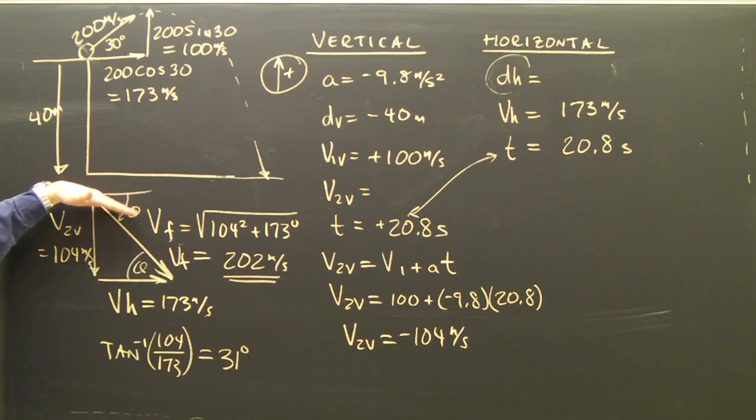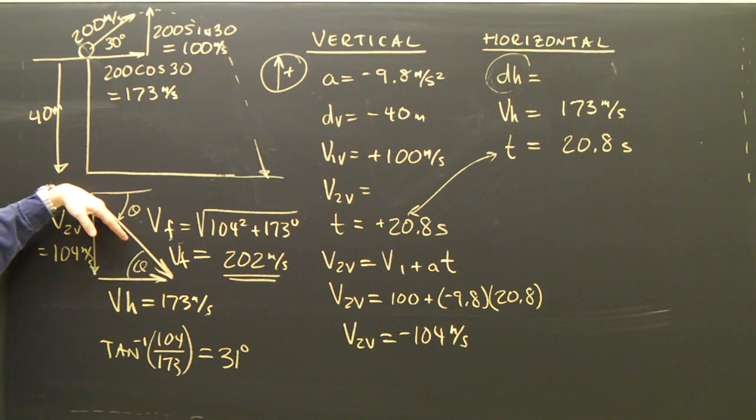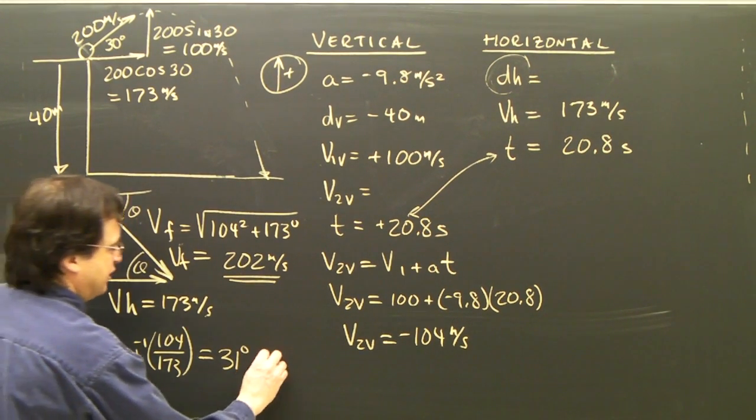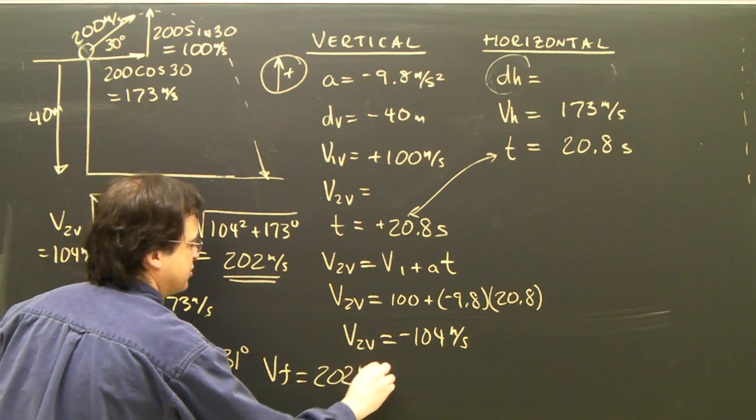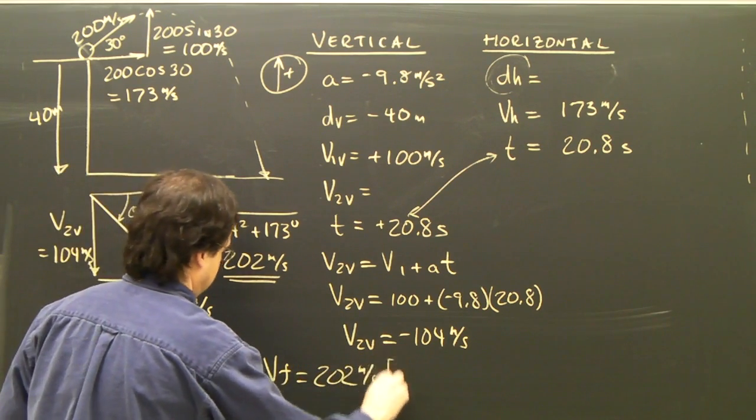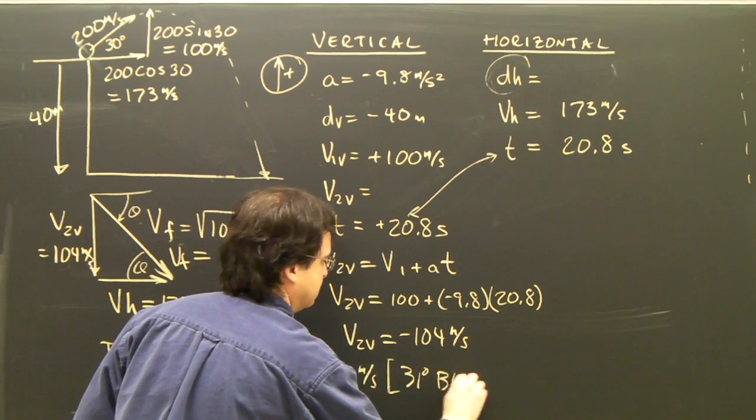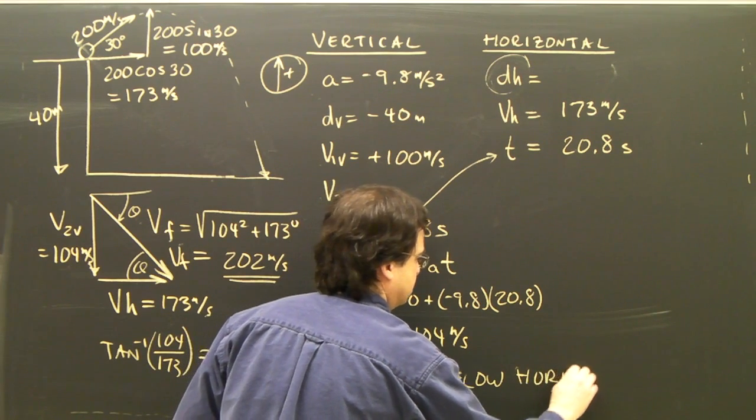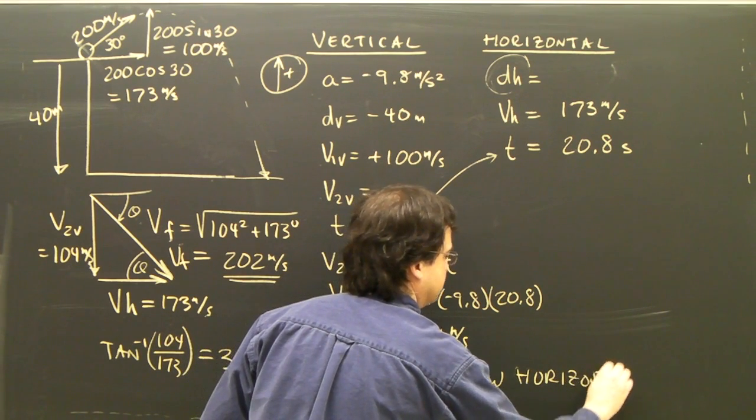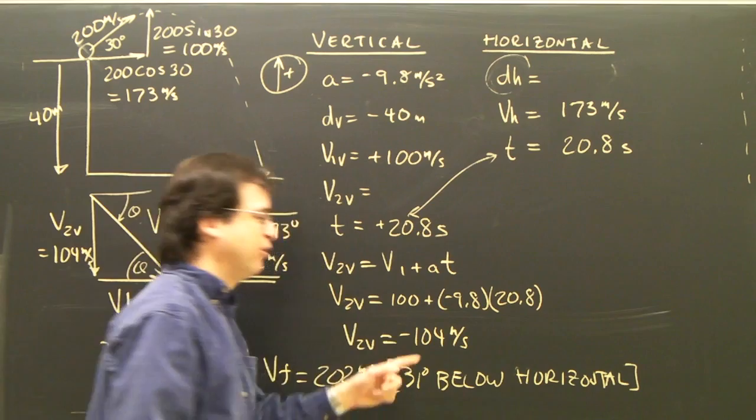So I now know it's 31 degrees below the horizontal. So my final velocity, the full final answer, is 202 meters per second, 31 degrees below the horizontal.